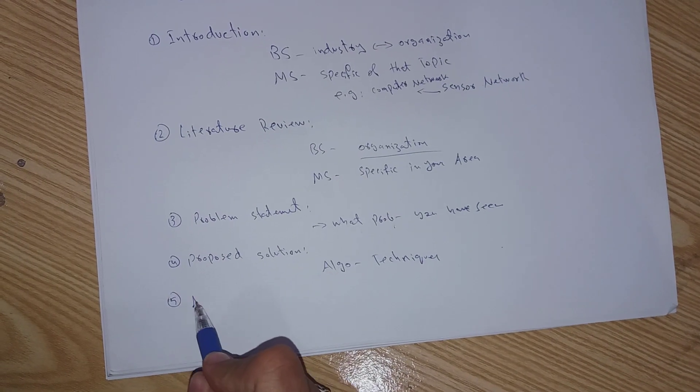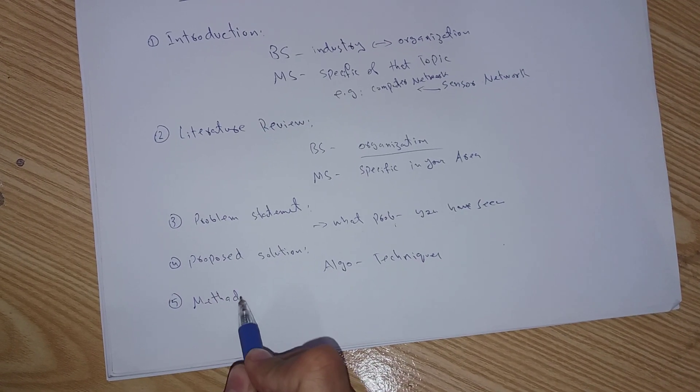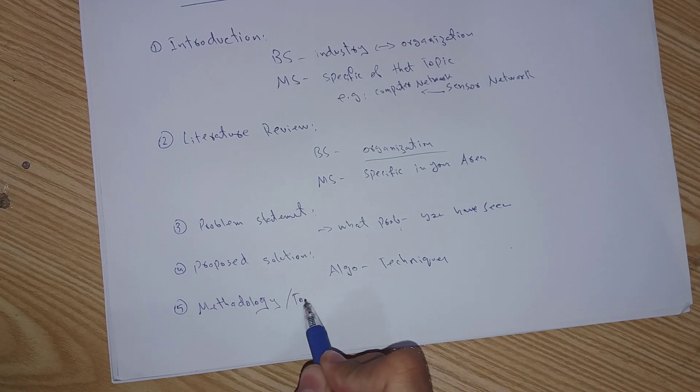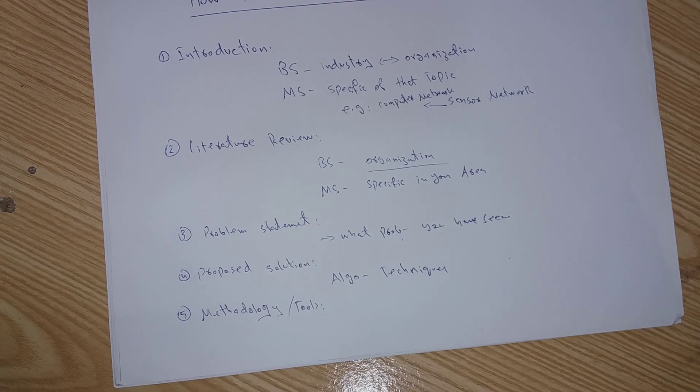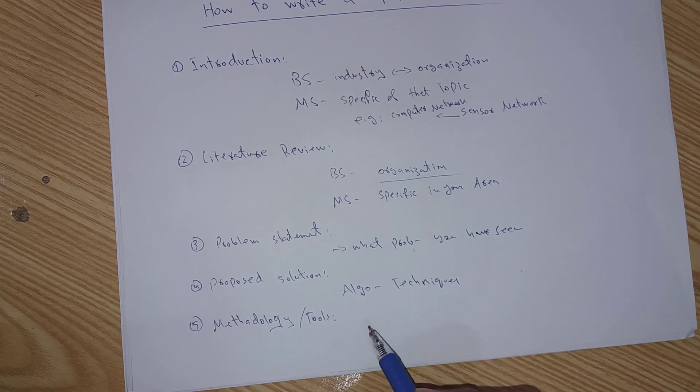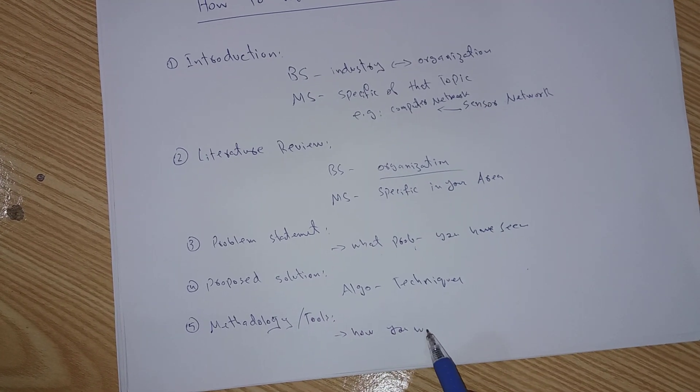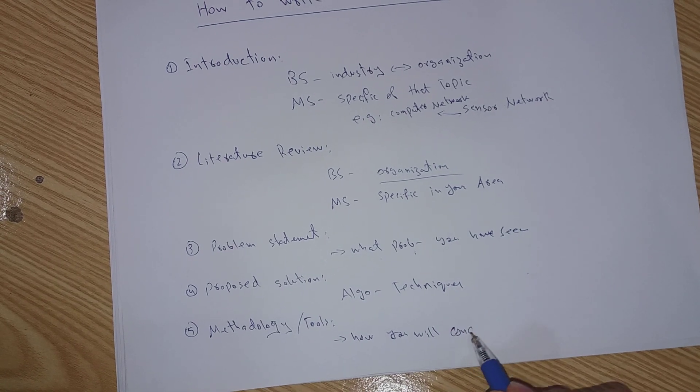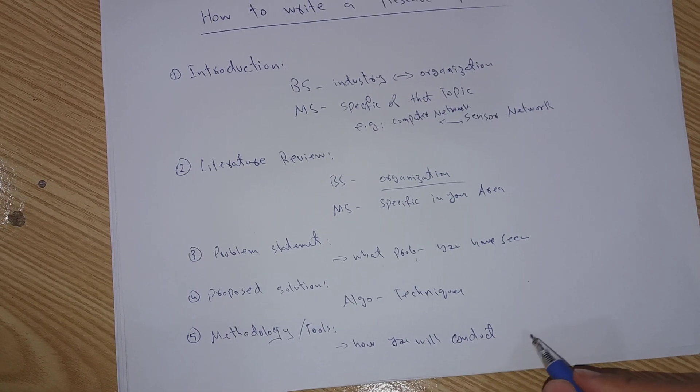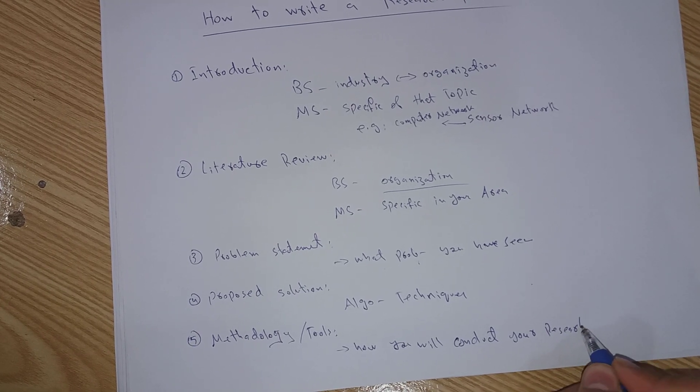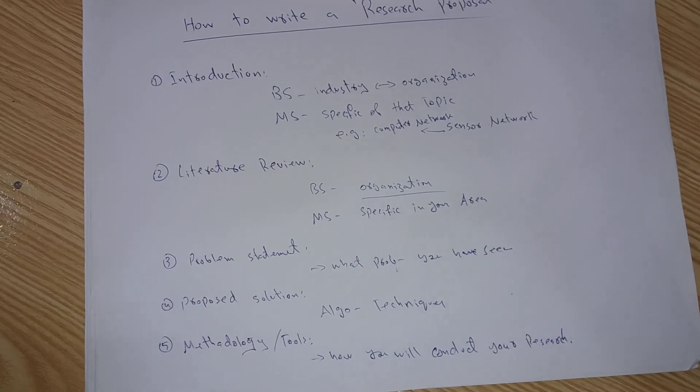The number fifth heading is methodology. Sometimes you can write it as methodology and tools. That means how you will conduct your research. How you will conduct this research?